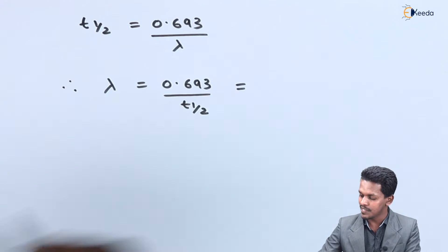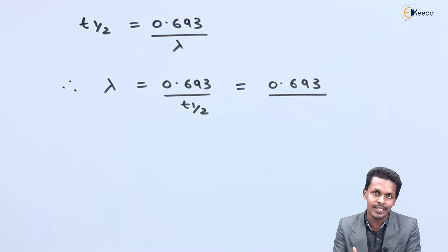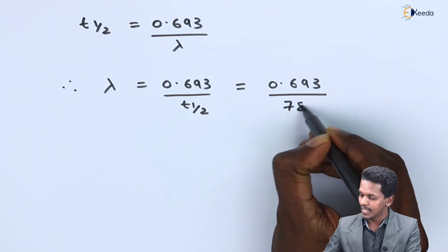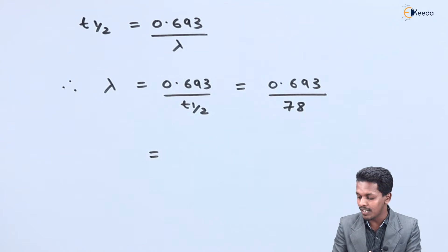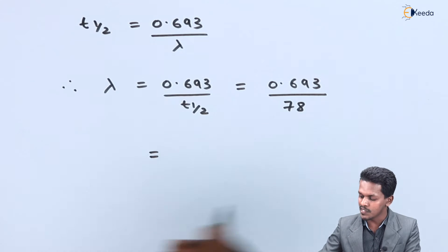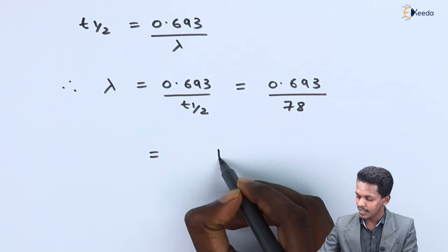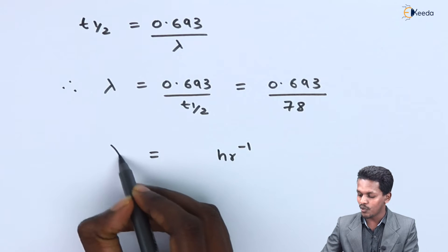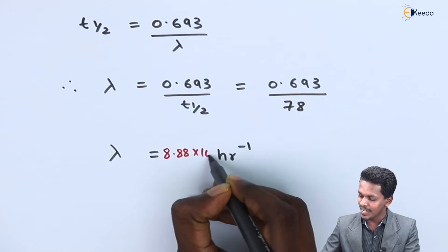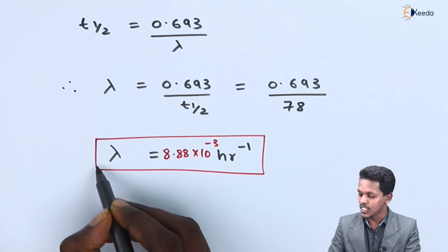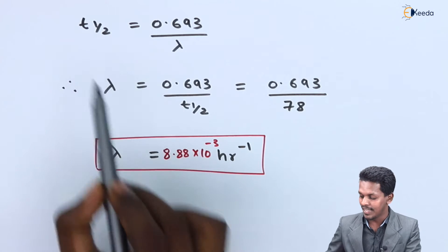Substituting the value of T half = 78 hours into lambda = 0.693 / 78, the unit will be hours inverse. The value of lambda we get is 8.88 × 10⁻³ hr⁻¹.